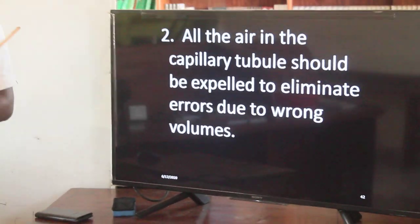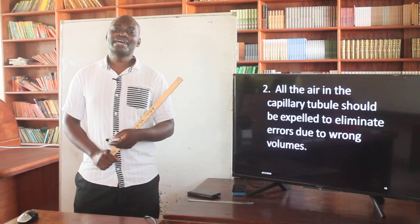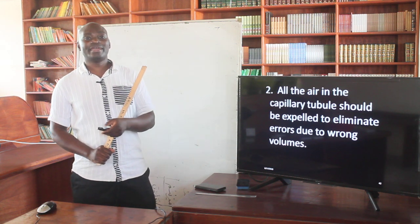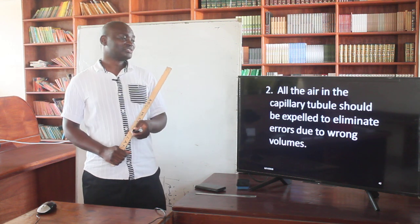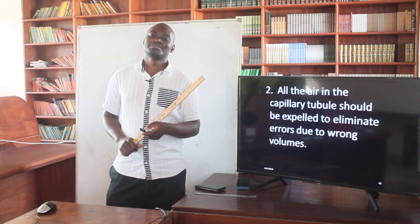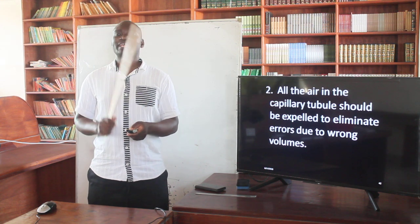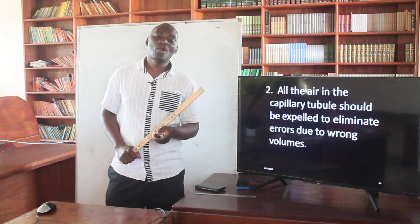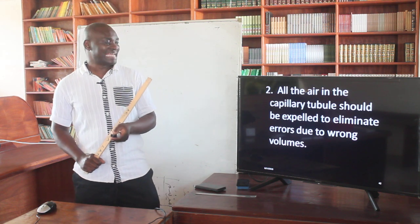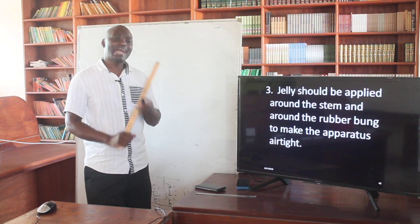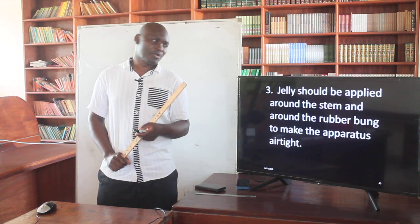The second precaution is that all the air in the capillary tubing should be expelled to eliminate errors due to wrong volumes. If there is any air in the capillary tubing it must be removed, because air occupies volume, and when air occupies a volume within the apparatus it will give you a wrong reading. So expel all the air in the capillary tubing.